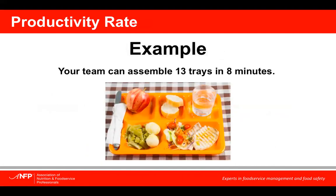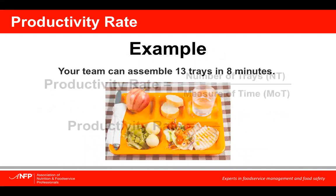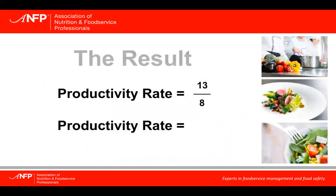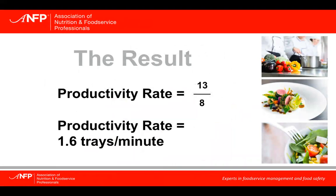For example, if your team can assemble 13 trays in 8 minutes, you would take 13 divided by 8 and get a result of 1.6 trays per minute.